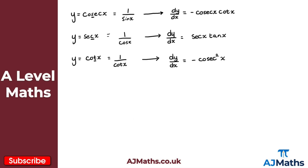What we're going to do now is use everything we've covered so far, such as the chain rule, product rule, and quotient rule, to show how we can differentiate each one of these to obtain these results. Let's begin by showing how we obtain the derivative of y equals cosec x.